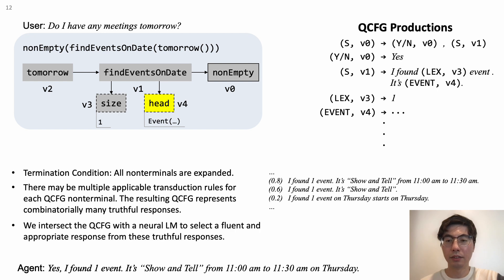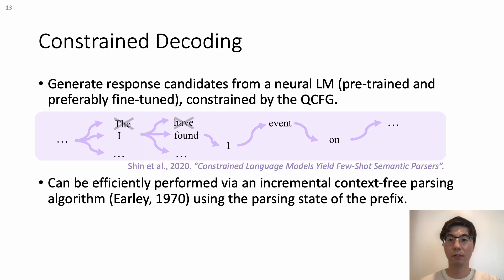We intersect the QCFG with a neural language model to select the fluent and appropriate responses from all these truthful responses. And this process is done by constraint decoding, adapted from our team's earlier work.